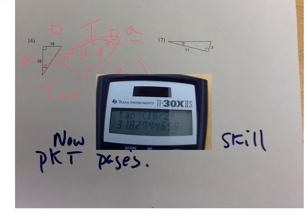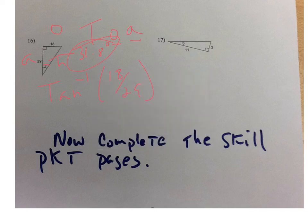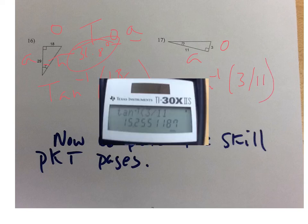Try this last problem on your own, then come back and watch my answer. For that one, here's the opposite and here's the adjacent, so it's tangent again. Arc tan of 3 divided by 11 — the calculator gives about 15.3 degrees. Now you should go into your skill packet and try those problems. You can also do the pizzazz sheet, both sides of it. Hope this helps — ask questions if you get stuck.